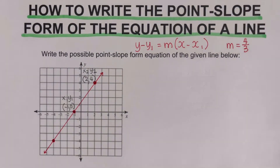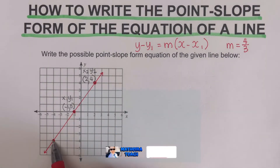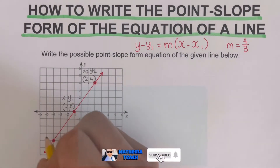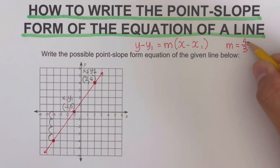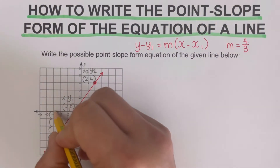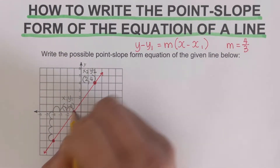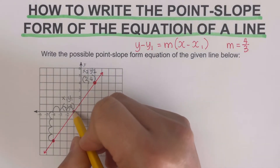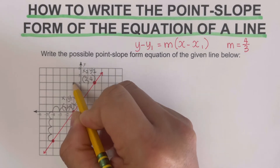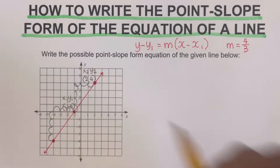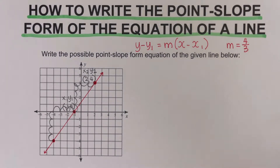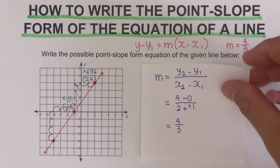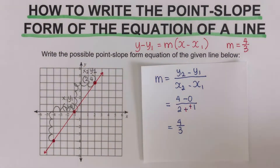The shorter way is using rise over run. From a point, we count how many times we go up: 1, 2, 3, 4 — so 4 up — and then over 1, 2, 3 — so 3 across. That confirms slope of 4 thirds. It also works starting from the other point: up 4, over 3. That's the fastest way to determine the slope, although you can also use the long method.